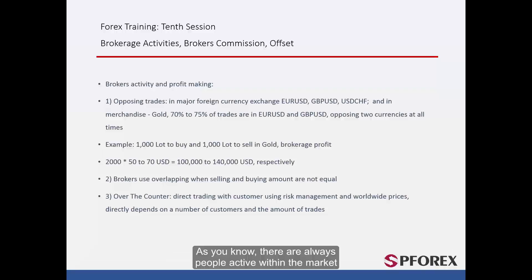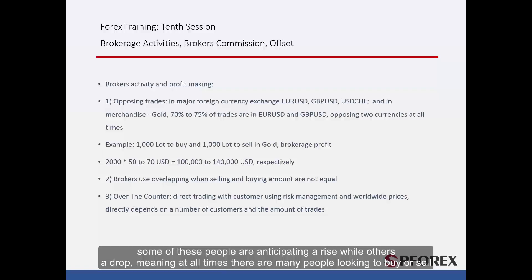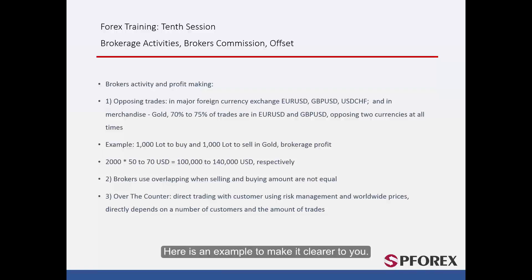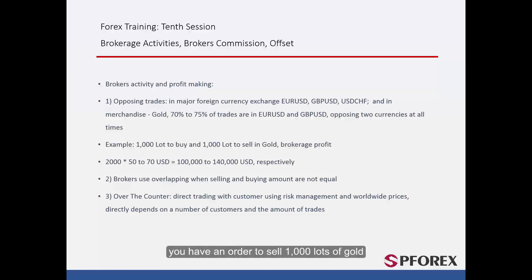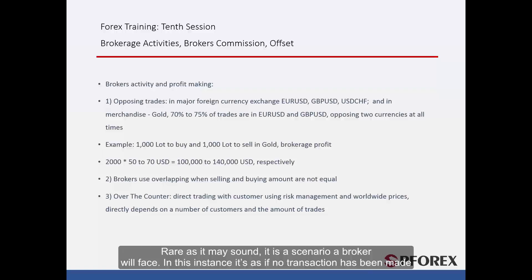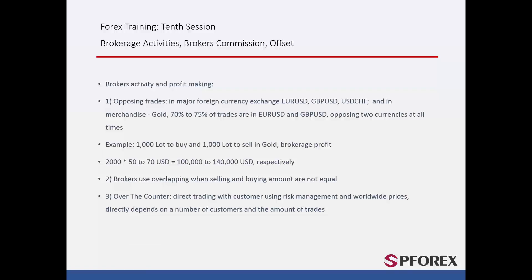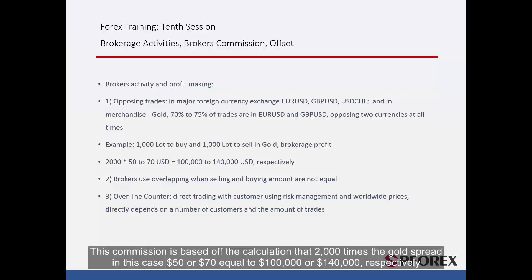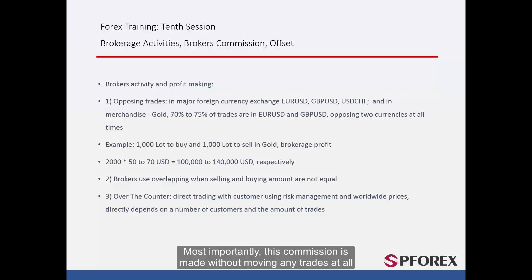There are always people active within the market — some anticipating a rise while others a drop, meaning at all times there are many people looking to buy or sell. For example, imagine you have an order to buy 1,000 lots of gold and at the same time an order to sell 1,000 lots of gold. Rare as it may sound, it is a scenario a broker will face. In this instance it is as if no transaction has been made. The broker's commission will be between $100,000 and $140,000, based on the calculation that 2,000 times the gold spread — in this case $50 or $70 — equals $100,000 or $140,000 respectively. Most importantly, this commission is made without moving any trades at all.